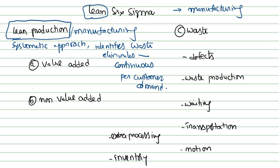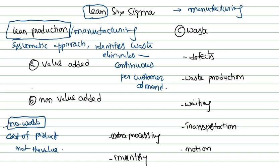We consider cost added to the product, not value added to the product — that is what we call 'no waste.' In any process, there are three types of work: value-added, non-value-added, and waste.